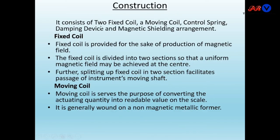The construction consists of two fixed coils, a moving coil, control spring, damping device, and a magnetic shielding arrangement. The fixed coils provide the magnetic field. The fixed coil is divided into two sections so that a uniform magnetic field may be achieved at the center, and splitting into two sections also facilitates passage of the instrument's moving shaft.